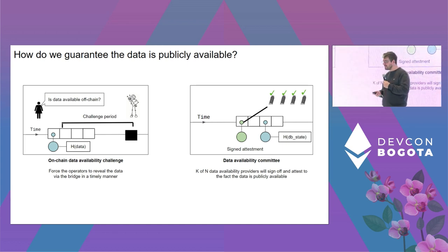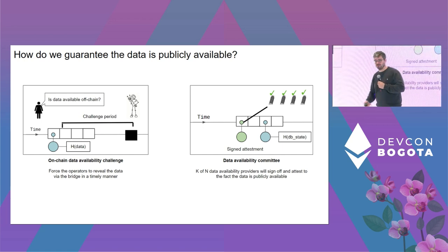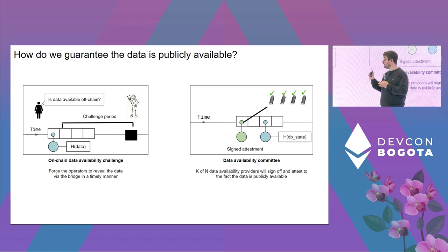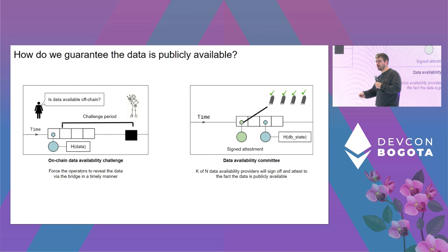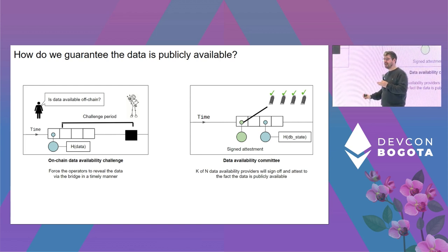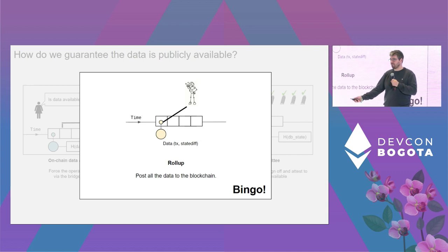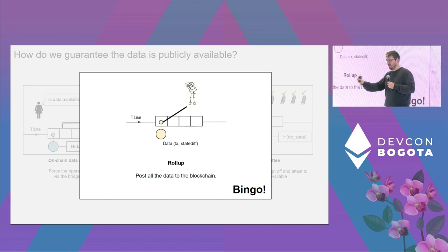How do we guarantee data is publicly available? In Plasma, the focus was a challenge process — could you challenge the operator to make data available? Today that problem could be solved, but the community has mostly moved on to other approaches. One way is a committee — like StarkNet's or Arbitrum Nova's data availability committee — which signs a message attesting they'll make the data available. Or you just do the rollup: post the data to Ethereum, which guarantees it was available at one point in time.